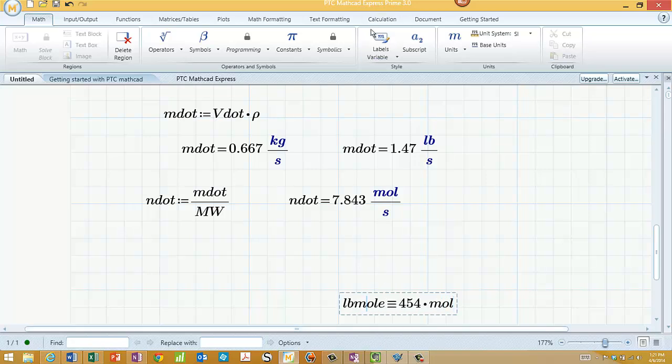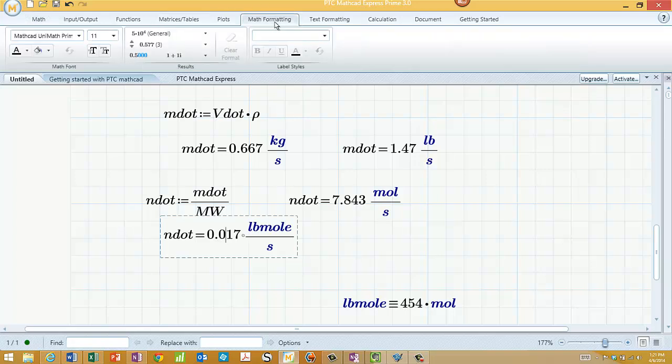454 thereabouts times mole. And I can assign that as a unit. And then when I say N dot equals, I can change this one to lbmole. And again, I'll give myself a couple more decimal places here and shade it a little bit, because that's what we were looking for.